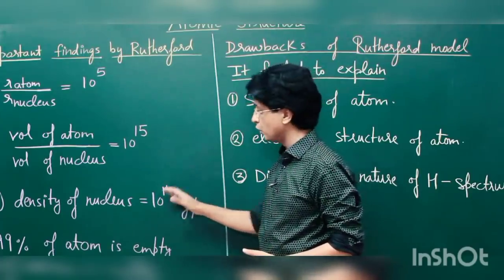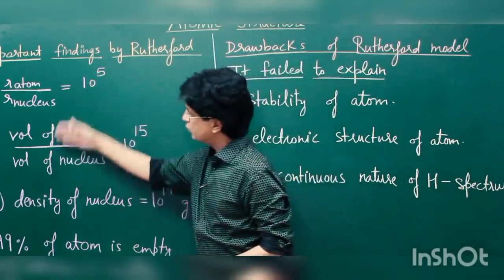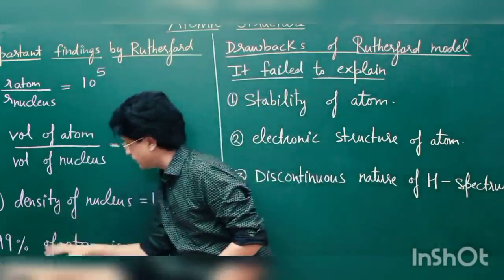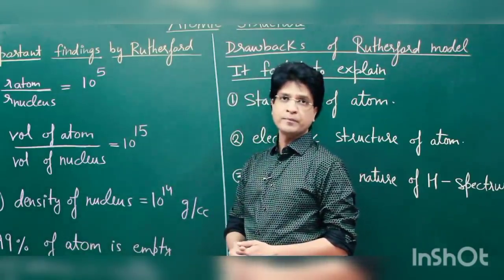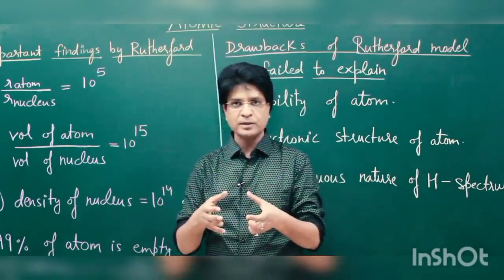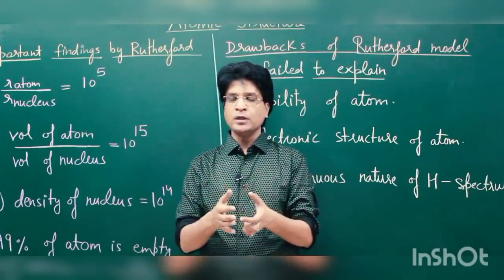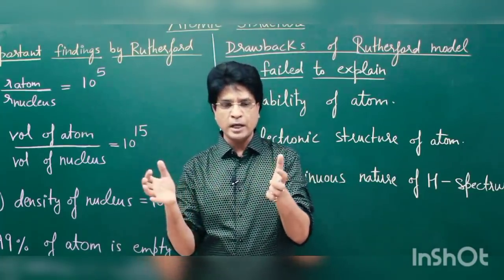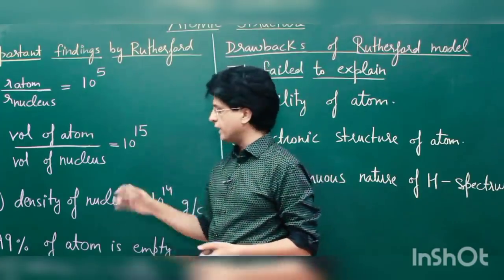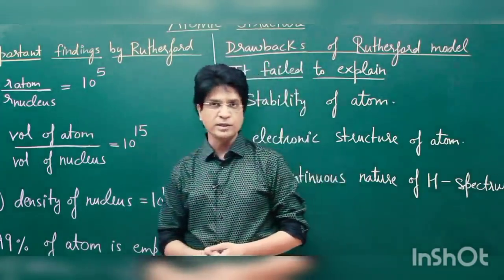A lot of mass is packed inside the nucleus. From this ratio you can easily conclude that 99% of the atom is empty. The nucleus contains most of the mass but is very small. The neutrons and protons are jam-packed inside it, to the extent of a density equal to 10 to the power of 14 grams per cc.